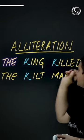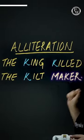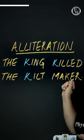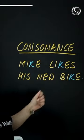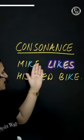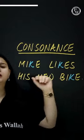In the case of alliteration: 'The king killed the kilt maker.' Here, K is being repeated. In the case of consonance: 'Mike likes his new bike.' K is being repeated here as well.